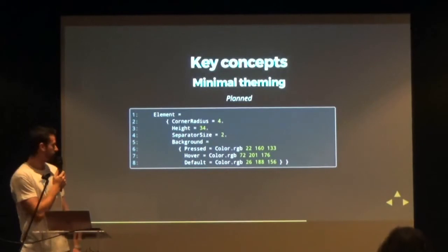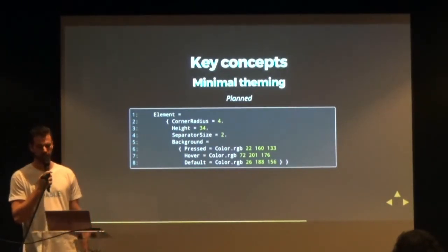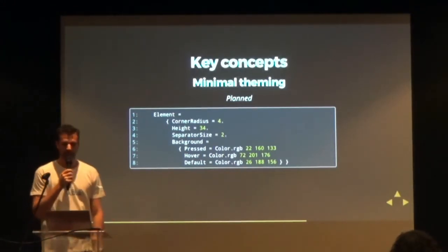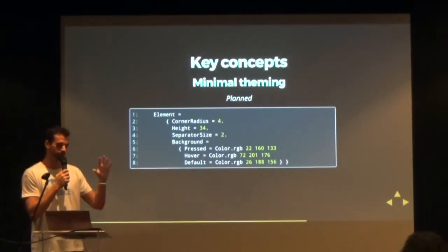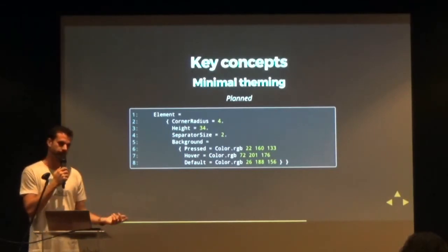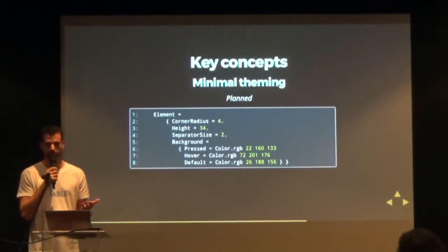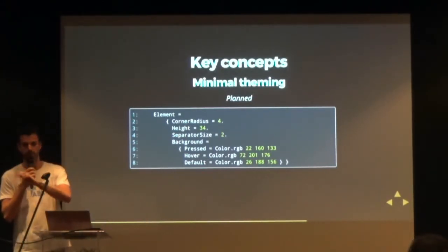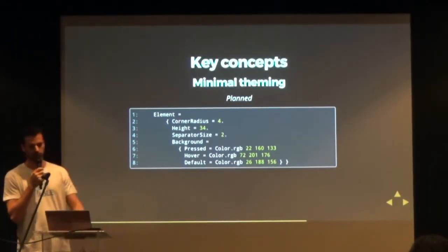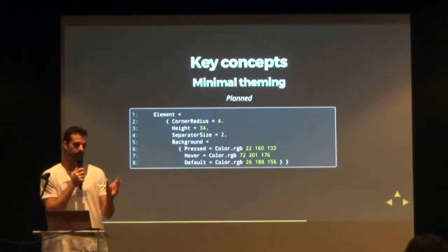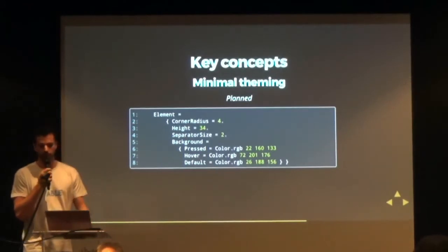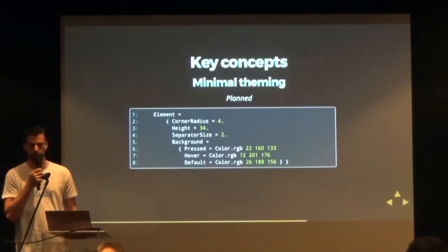Another key concept in Ink is the minimal theming system. Currently it's about 100 lines of code but should be minimized to 30 lines for the same system. When you look at your application, your inputs, buttons, and chat box share the same colors and have the same needs — they can be pressed, hovered, or have a default color. For a coherent look and feel, you should have almost the same color throughout. So rather than specifying that every button and input is black individually, elements inherit behavior like corner radius, minimal edge, separators, and background behavior — and you can overwrite this for specific components when needed.